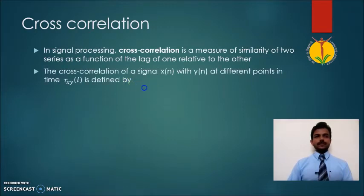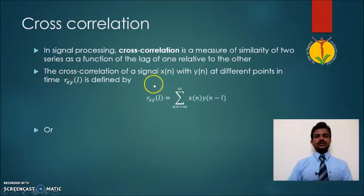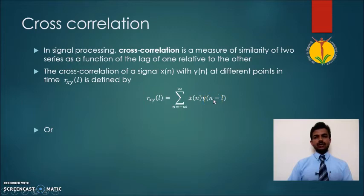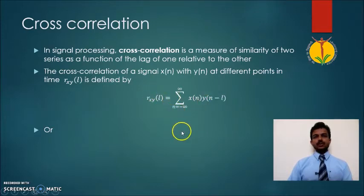Here we have the term R which is defined by the mathematical equation: summation from N equals minus infinity to infinity of X(N) into Y(N minus L). So it is nothing but the comparison between X(N) and Y(N), but here we are shifting the sample by L with different values. This equation gives the cross correlation between X and Y.